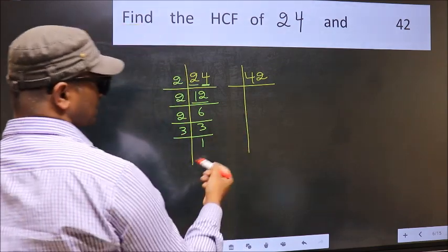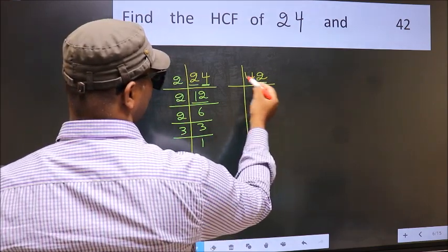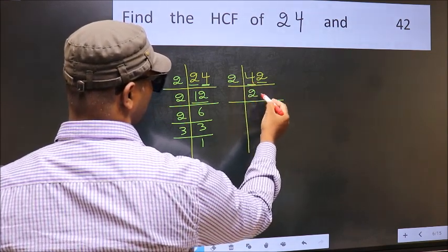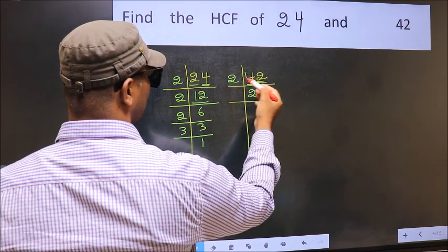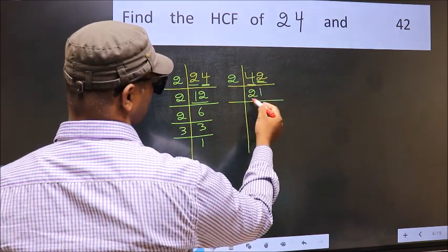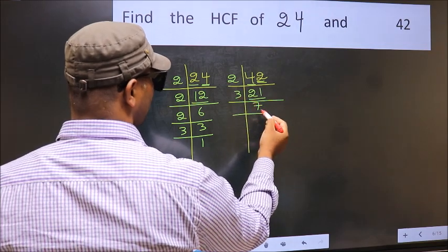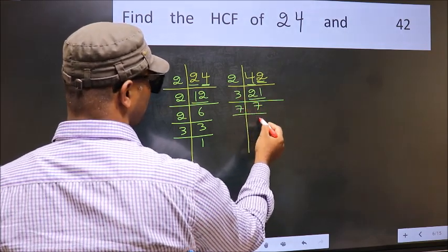Now the other number. Last digit is even, so take 2. 42, 2 times 21 is 42. Now 21 is 3 times 7 is 21. 7 is a prime number, so 7 times 1 is 7.